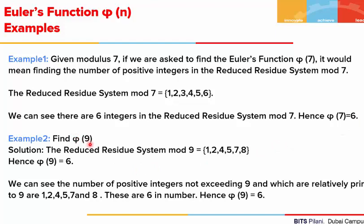If we are asked to find phi of 9, the reduced residue system mod of 9 will be 1, 2, 4, 5, 7, 8. Again we get 6 elements in this reduced residue system. So phi of 9 is 6. We can check: the positive integers which do not exceed 9 and are relatively prime to 9 are only 1, 2, 4, 5, 7, 8. So phi of 9 is 6.